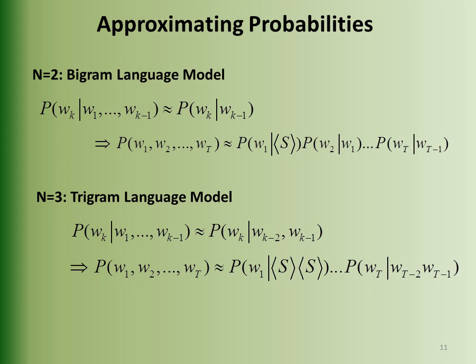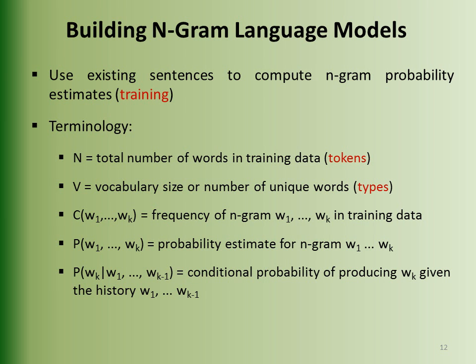Here is the Markov assumption for the bigram language model and the trigram language model. To build N-gram language models, some key terminology: N is the total number of words, V is the vocabulary size, C is the count (frequency), and P is the probability estimate. The conditional probability of producing Wk given history W1 to Wk minus 1 is central to these models.